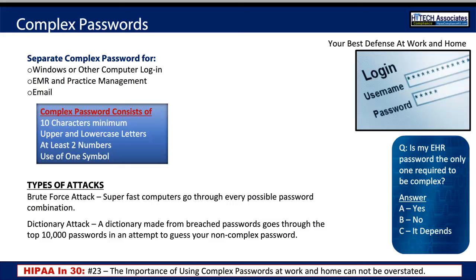Criminals use two types of attacks: a brute force attack where fast supercomputers go through every possible password combination, and a dictionary attack based on previous breaches of usernames and passwords. They put together an attack that can go through the 10,000 most commonly used passwords — which covers about 99% of the population's passwords that are not using a complex password — to break into the system.